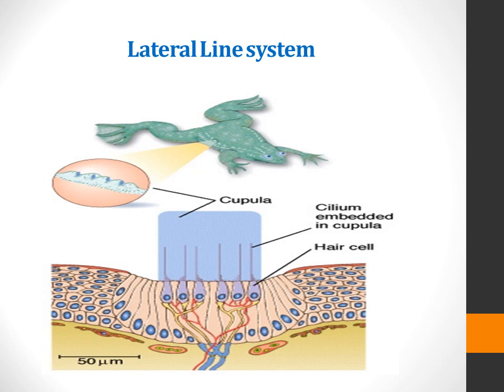Looking at the components of the lateral line system, the first component is the cupula. The hair cells are embedded in the cupula.